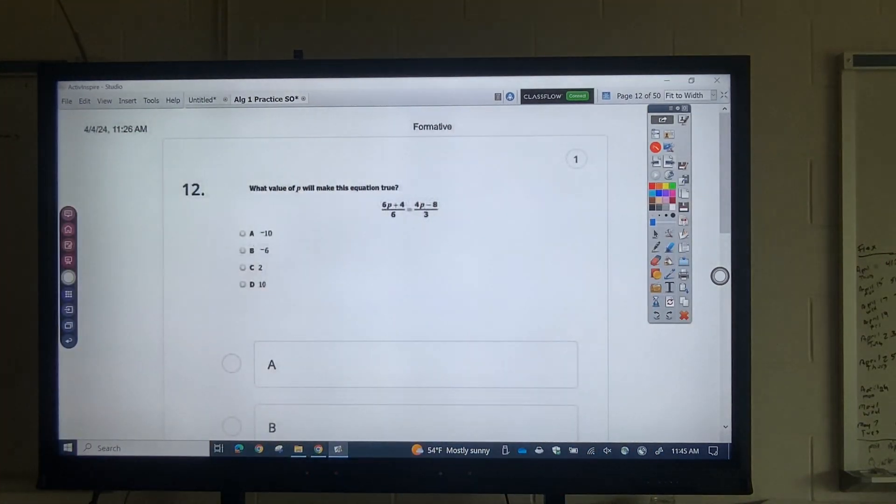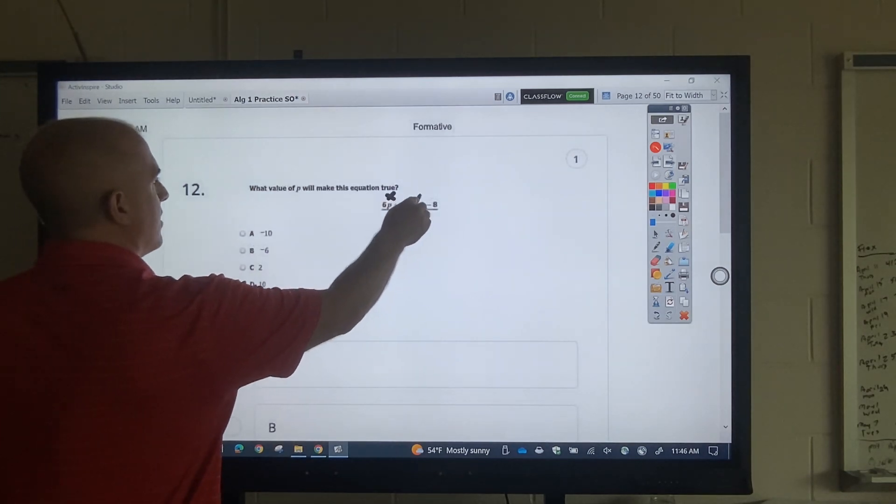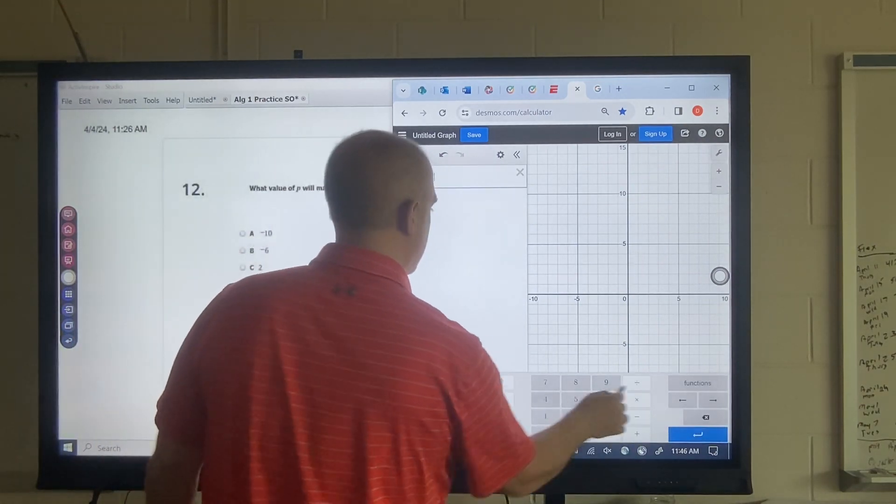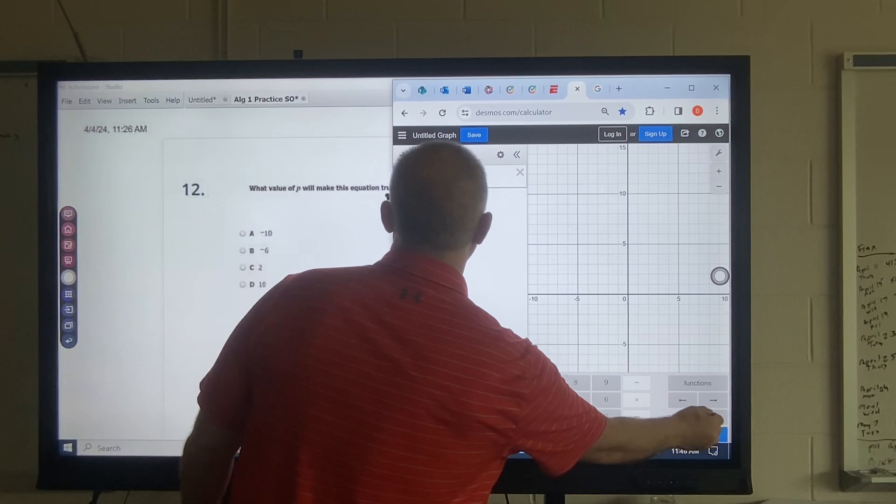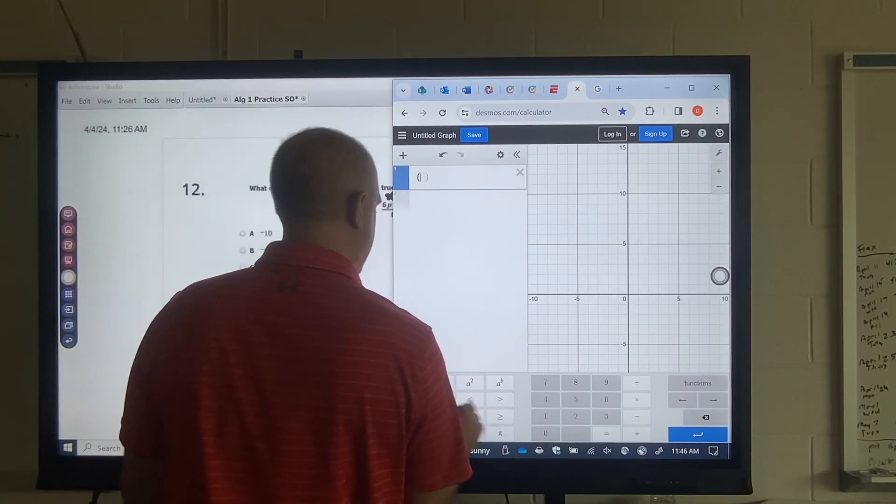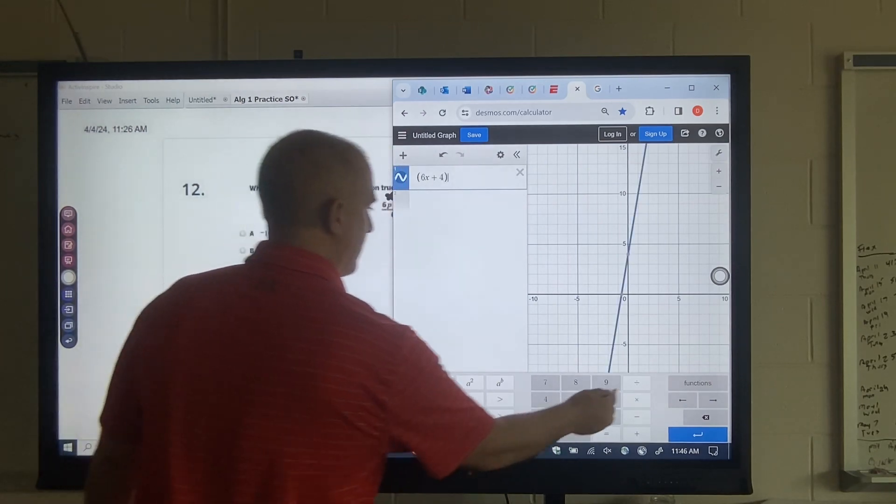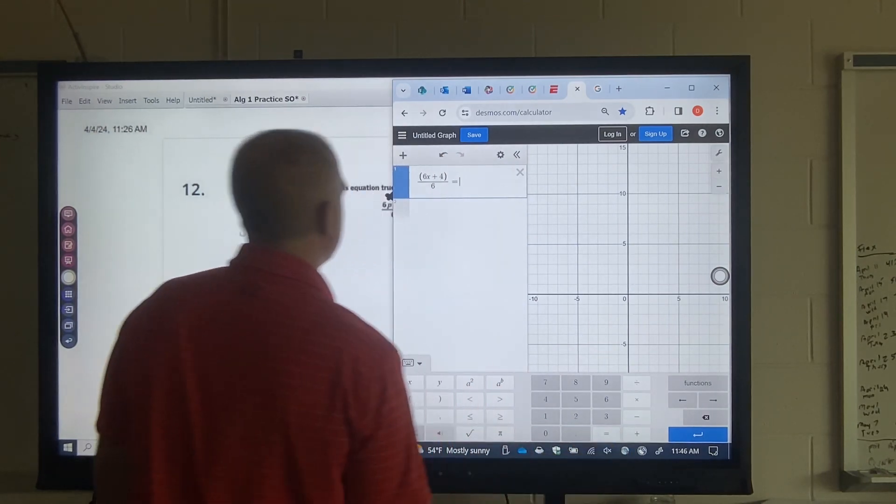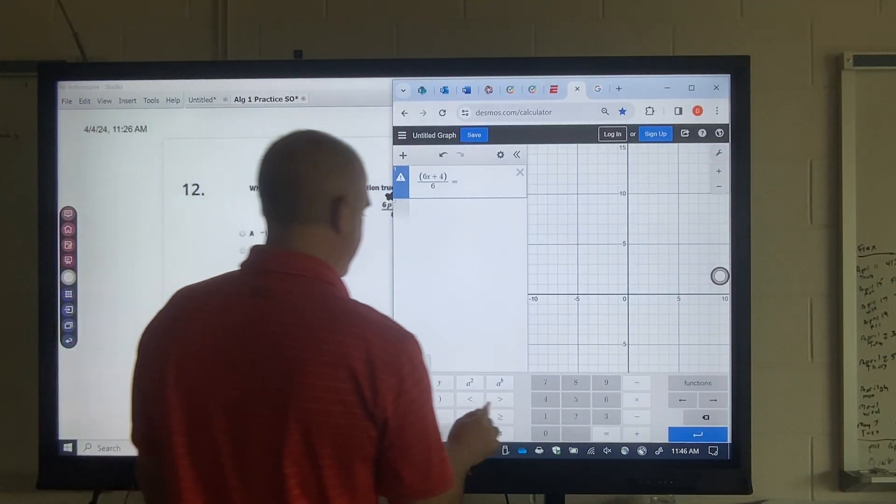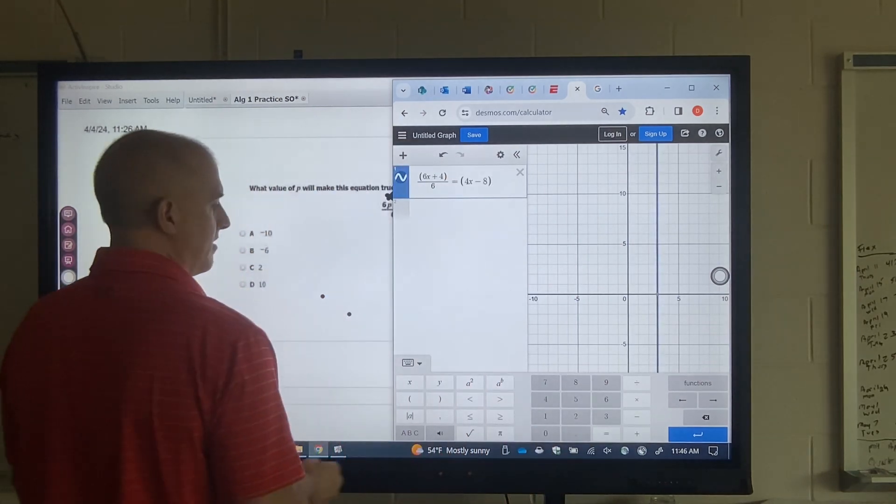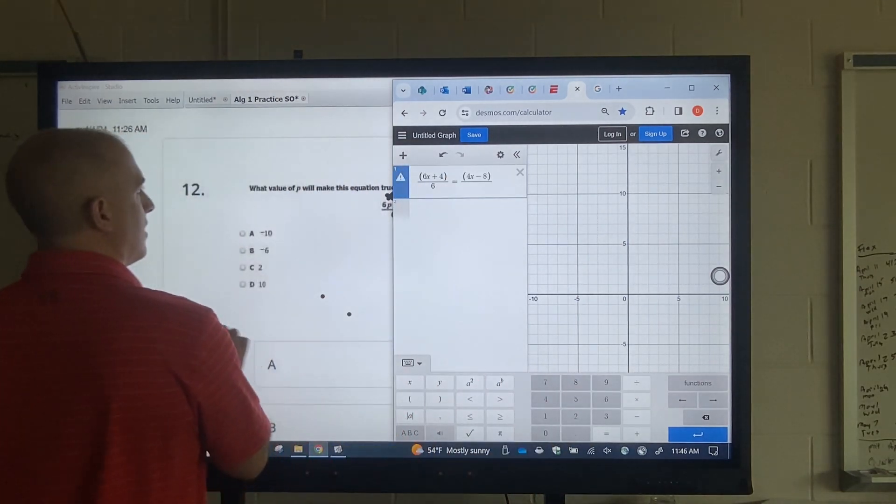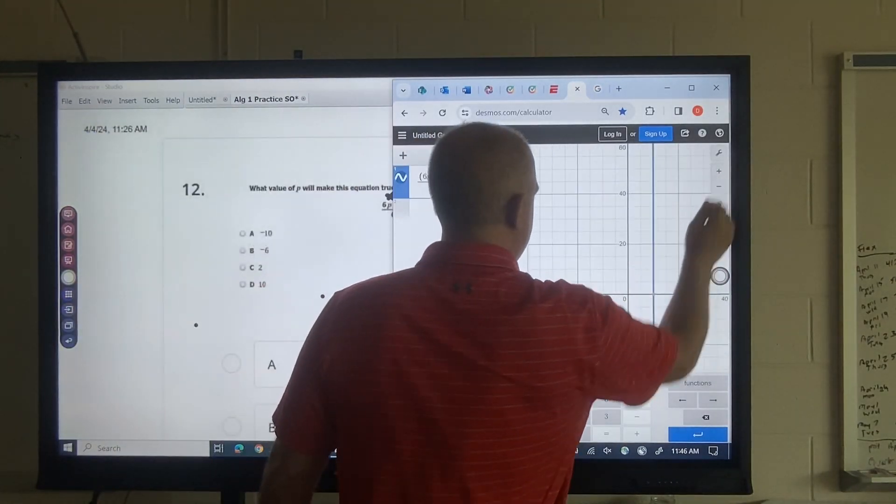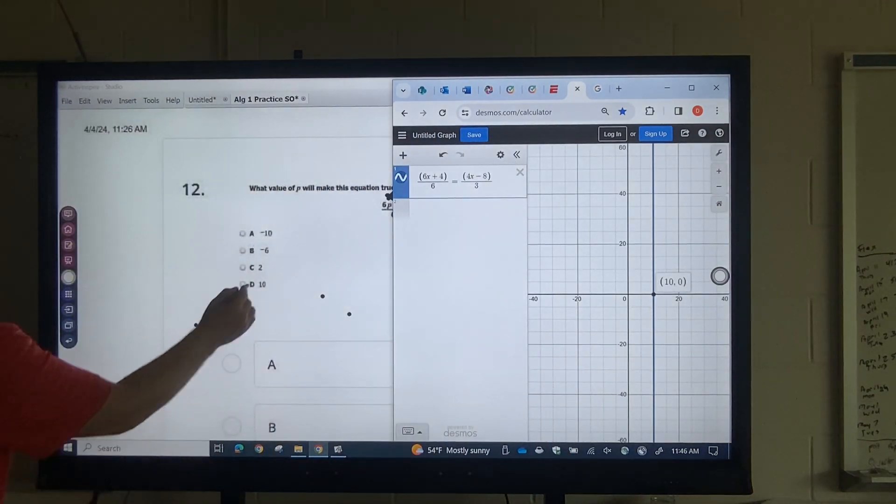Okay. Another equation one. Now, if you ever get a different letter, just use x instead of p. Okay. So 6x plus 4 divided by, actually, I got to do parentheses around that. That's the only way that will work. 6x plus 4 divided by 6. Okay. And click over here. It equals 4x minus 8 divided by 3. Okay. And then I just zoom out until I find where it crosses. It crosses at 10. So that's my answer.